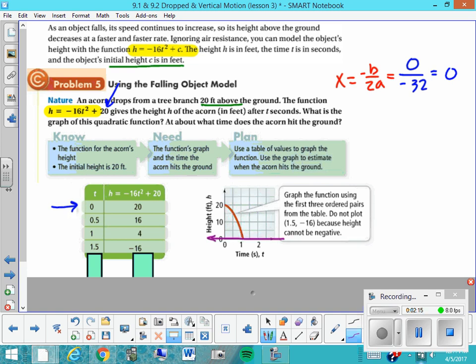And so we can see that it crosses a little bit after one second. So at one second it's still at 4 feet of height, but then by one and a half seconds it's already at negative 16 feet in height, which is not actually really going to happen because the acorn's not going to drive 16 feet into the ground. But it gives us the accurate curve that we can use to predict the time it will hit the ground.